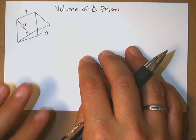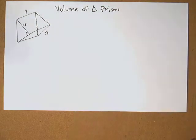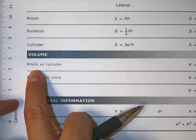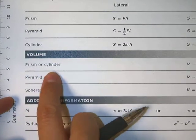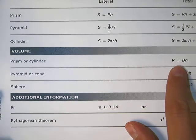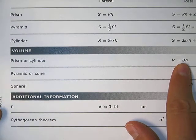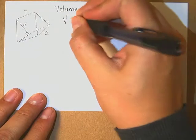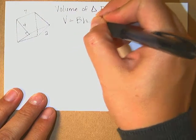So the first thing I want to do is look on my formula chart to find the formula for volume of a prism. And on the newest math chart, it says prism or cylinder, volume equals capital B times H. That's different from a lowercase b. So volume is capital B times H.